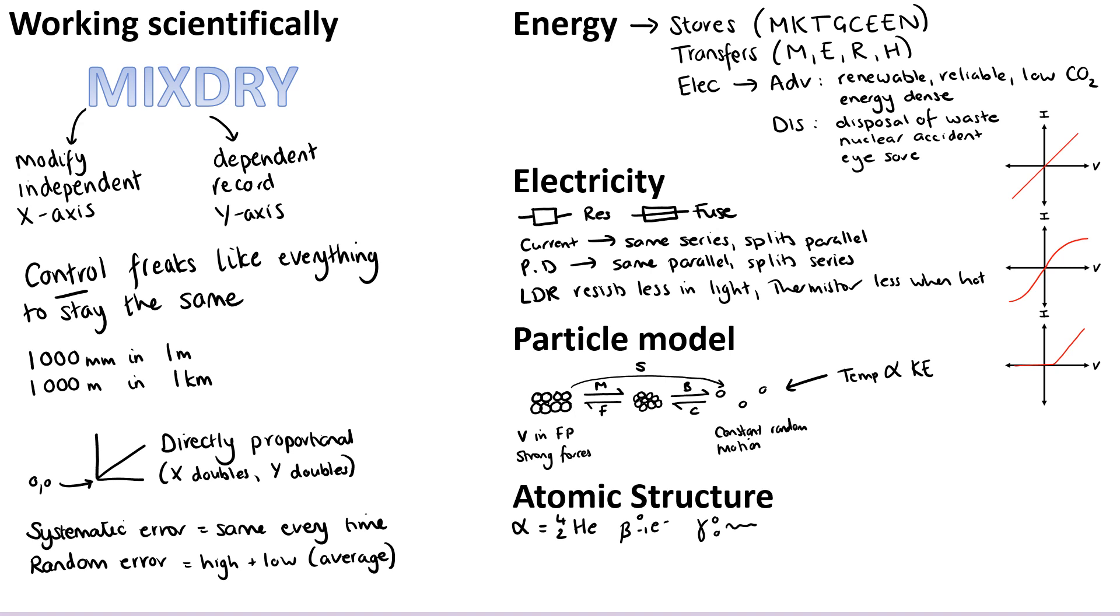And then for atomic structure, you might be focusing on the different kinds of radiation, so just giving yourself a little reminder of what they all are. Thinking about the fact that alpha particles can be stopped by paper, beta particles by thin aluminum, and gamma radiation needs a thick layer of lead to stop it. Alpha radiation is the most ionizing, but gamma radiation is the most penetrating.